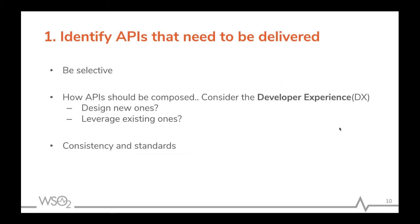The product manager also needs to consider what kind of return the organization will reap when a given API is exposed. So an API product manager has to take all these things into consideration and make a strategic decision where all parties are at an advantage. The next thing is that the API product manager needs to consider how an API should be composed — in other words, they need to consider the developer experience. The developer experience term is coined because the primary consumer base of APIs are developers.